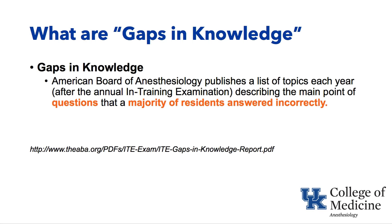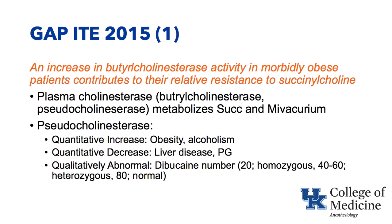The first gap in knowledge in 2015 was that an increase in butyrocholinesterase activity in morbidly obese patients contributes to their relative resistance to succinylcholine. Clinically, we increase our dose of succinylcholine to one and a half per kilo instead of one per kilo in the morbidly obese patient. One of the reasons is their plasma cholinesterase, which is another name for butyrocholinesterase.